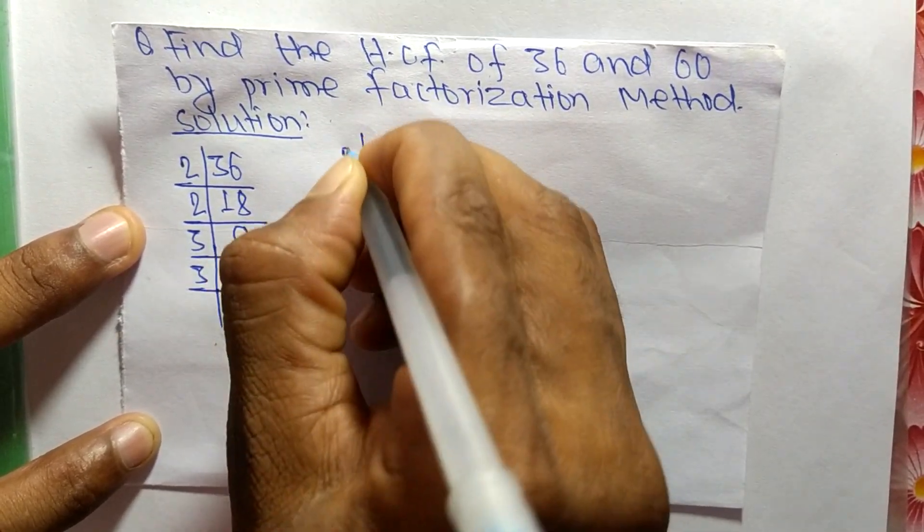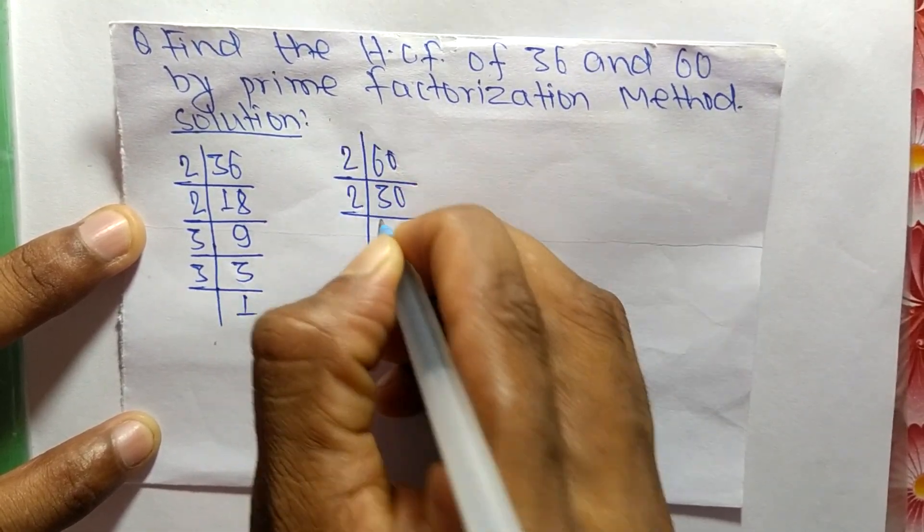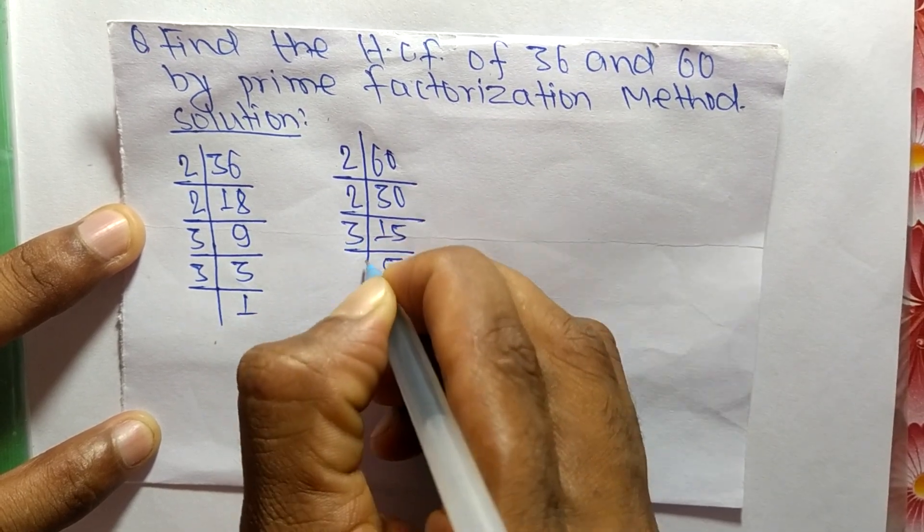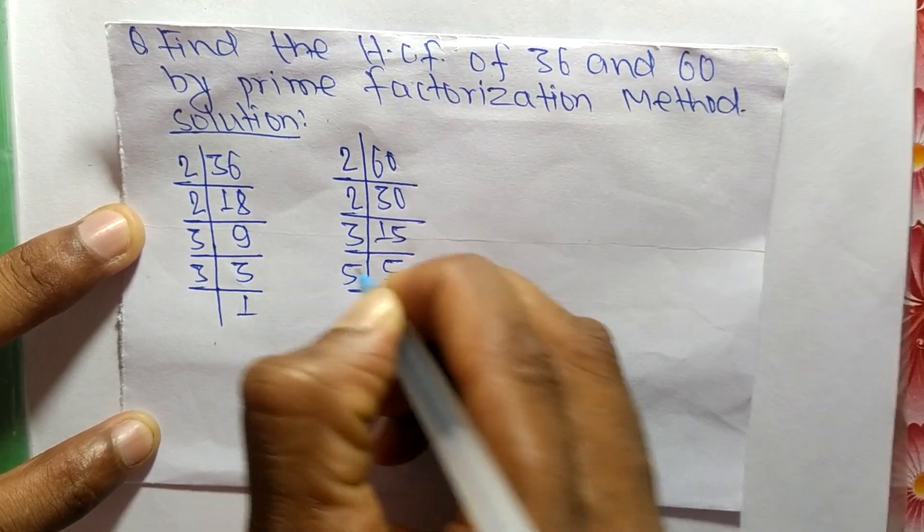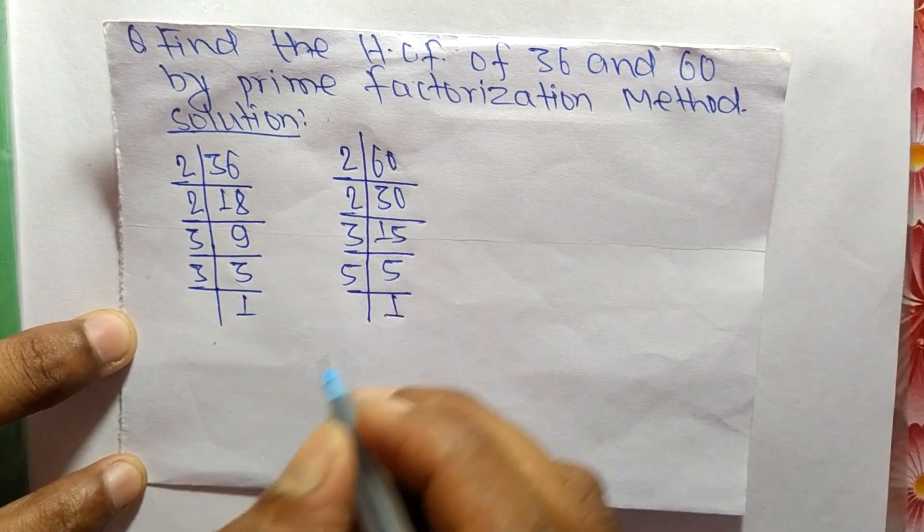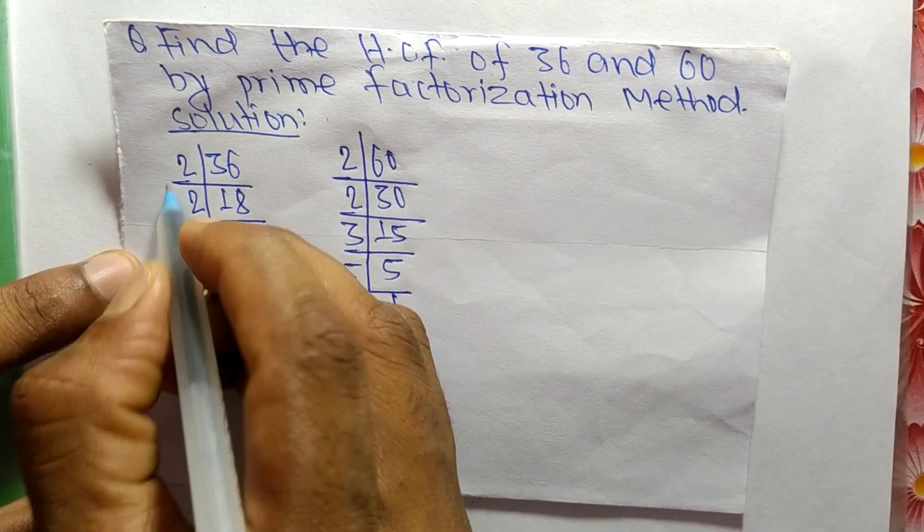The prime factors of 60 are: 2 times 30 means 60, 2 times 15 means 30, 3 times 5 means 15, and 5 times 1 means 5. So now from these prime factors, we can write 36 is equal to...